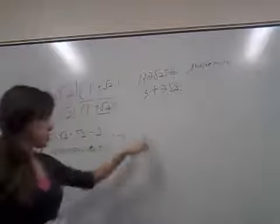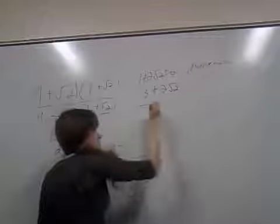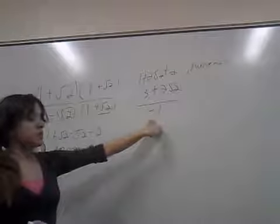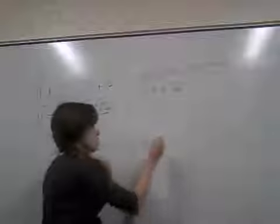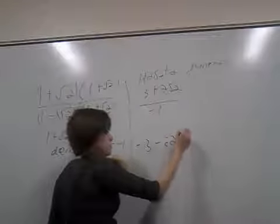So just keeping our fraction together, this is what we have. We simplify this a little bit more and we get negative 3 minus 2 root 2.